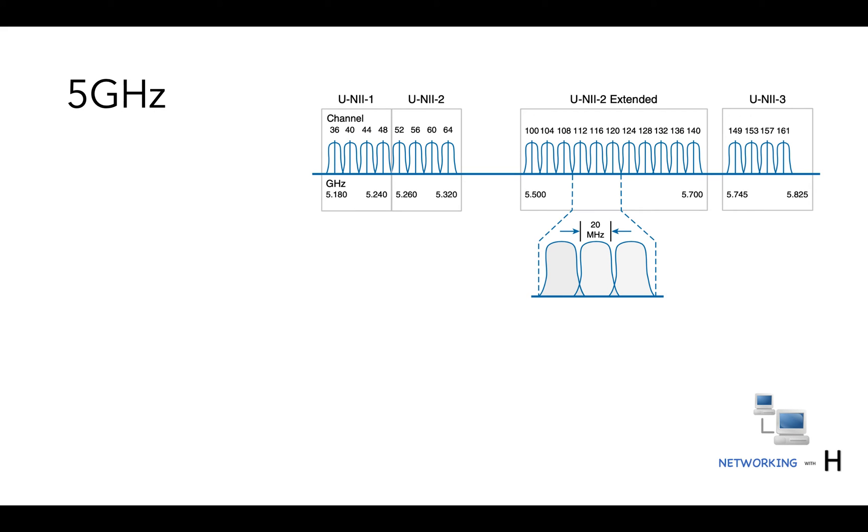Next, let's discuss the 5 gigahertz band. It is much wider and includes 24 channels, which makes it easier to select a channel in this band that doesn't cause interference. The 5 gigahertz band actually contains four separate and distinct bands.